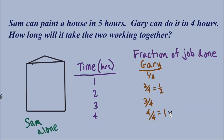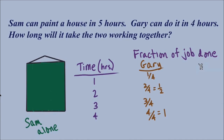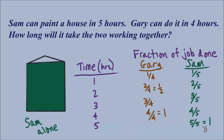Now let's look at the same idea using Sam painting alone. She can paint the house in five hours, so after the first hour one-fifth is painted. After two hours, two-fifths. After three hours, three-fifths. After four hours, four-fifths, and after five hours, one whole. We know the answer will be somewhere between two and three hours, and writing this information helps us see a pattern to set up an equation.